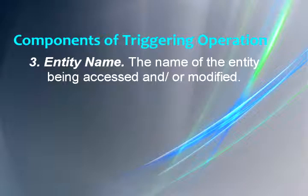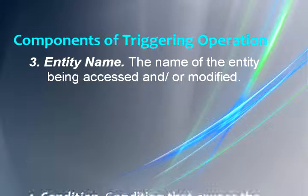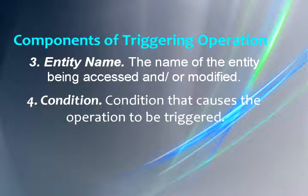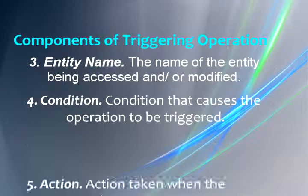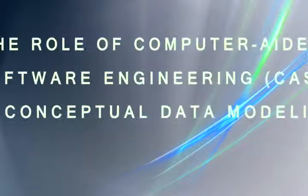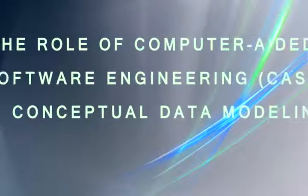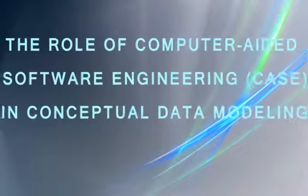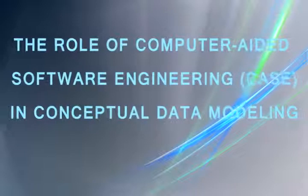Third, entity name: the name of the entity being accessed and or modified. Fourth, condition: the condition that causes the operation to be triggered. And fifth, action: the action taken when the operation is triggered. The next topic is about the role of CASE in conceptual data modeling.